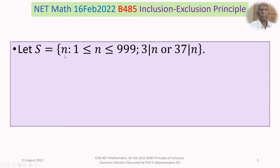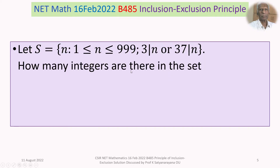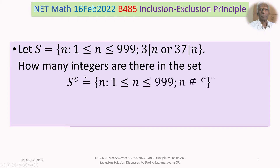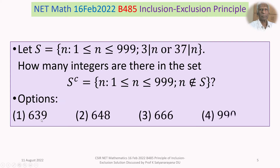The problem is: let S be the set consisting of n, where 1 ≤ n ≤ 999, and 3 divides n or 37 divides n. How many integers are in the set S complement, consisting of n where 1 ≤ n ≤ 999 and n does not belong to S? The four options are: option 1: 639, option 2: 648, option 3: 666, option 4: 990.